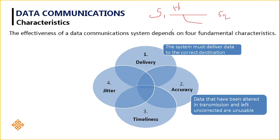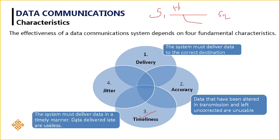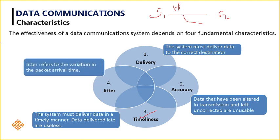The third important characteristic is timeliness. The system must deliver data in a timely manner — data delivered late is useless. Whatever data the sender is sending, it must be received within the fixed timestamp or round trip time. For example, in client-server communication, the server sends an OTP to the client with a certain lifetime. The data has to be received within that exact time. If the data is received after expiry or with excessive delay, the data is of no use. Timeliness must be maintained by the communication system.